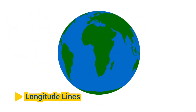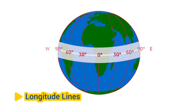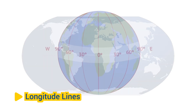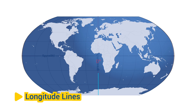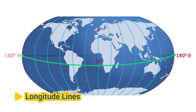Longitude Lines: Longitude lines are imaginary lines that run from the North Pole to the South Pole, measuring distances east or west of the prime meridian. The prime meridian, located at 0 degrees longitude, passes through Greenwich, England. Longitude lines are used to specify locations in terms of east-west position. The maximum longitude is 180 degrees east or west, halfway around the globe from the prime meridian. Longitude lines are also called meridians.